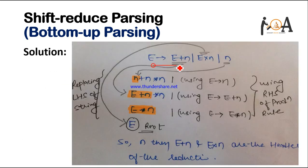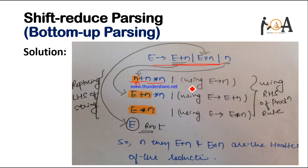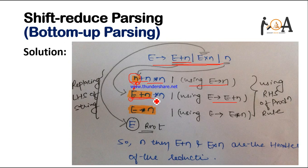We start from the left-hand side of the given string and use the right-hand side of the production rule. Here, the first symbol is N. N is matching with the right-hand side of the production rule — yes, E derives N. So by using E derives N, we replace this N with E. After replacing, we get E plus. E plus is not matching, so we add N to get E plus N. E plus N matches the production rule, so by using E derives E plus N, we replace E plus N with E.